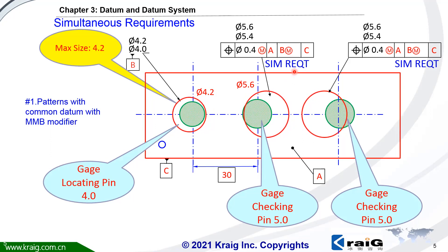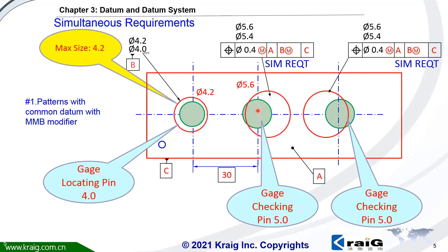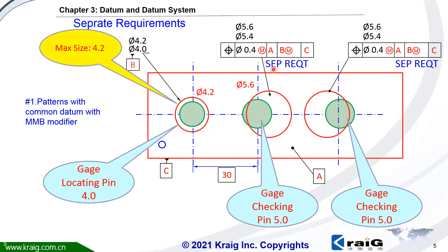What if we only use one of these holes — use this one and the other is a backup, or use the other one while this one is a backup? In this situation, we won't want to use the simultaneous requirement. We would like to use the separate requirement. So we need to put SEP-REQT here. Once there's SEP-REQT, that means each hole will be required separately to datum A, B, M, C, and the datum shift can be applied separately to each toleranced feature.